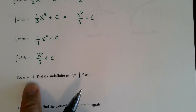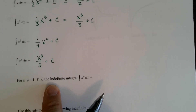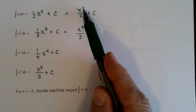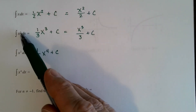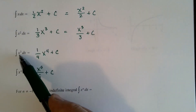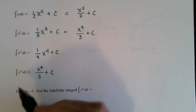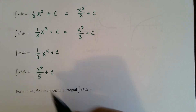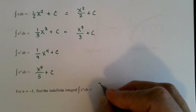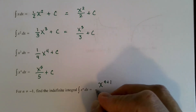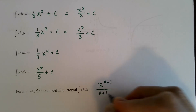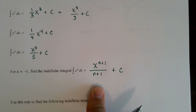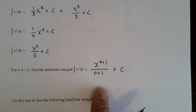In general, as long as n is not equal to negative 1, the indefinite integral of x to the n is x to the n plus 1, divided by n plus 1, plus c. This is the general power rule for antiderivatives. You can see the pattern: x to the 1st gives x squared over 2; x to the 2nd gives x cubed over 3; x to the 3rd gives x to the 4th over 4, and so on. The power is always 1 more.